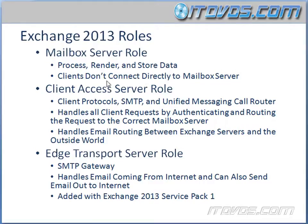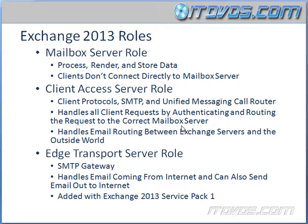Clients, like Outlook for example, don't actually connect directly to the Mailbox Server. They connect to the Client Access Server. What the Client Access Server does is it has protocols — SMTP, unified messaging, call routing — and it connects to the Mailbox Server for the client. So the client, like Outlook, connects to the Client Access Server. Then the Client Access Server sees that request and connects to the appropriate Mailbox Server to retrieve the emails stored on the Mailbox Server. The Client Access Server handles all client requests by authenticating and routing the request to the correct Mailbox Server.